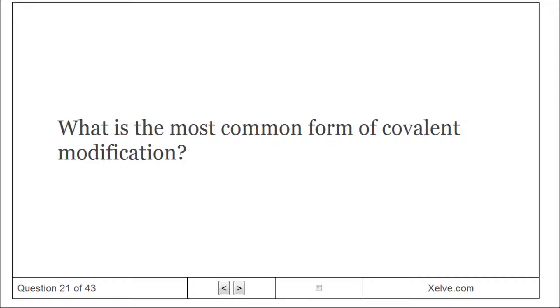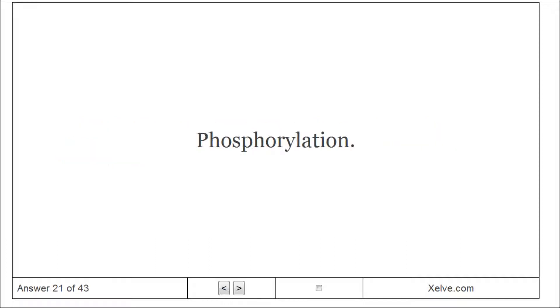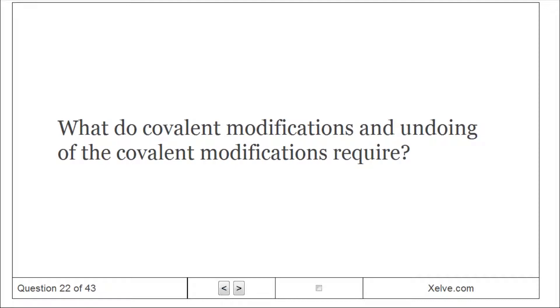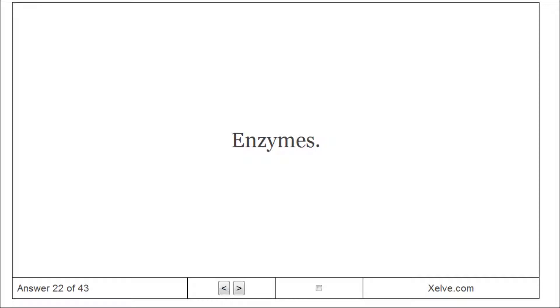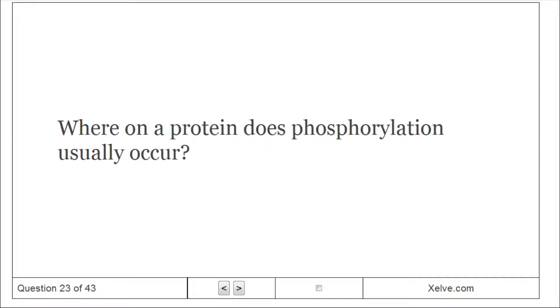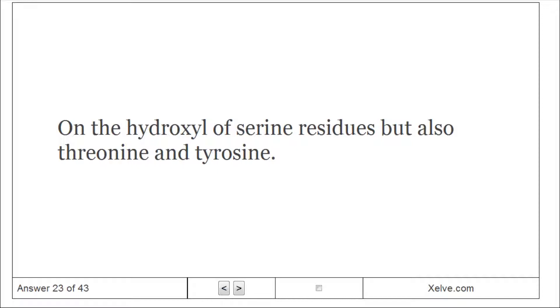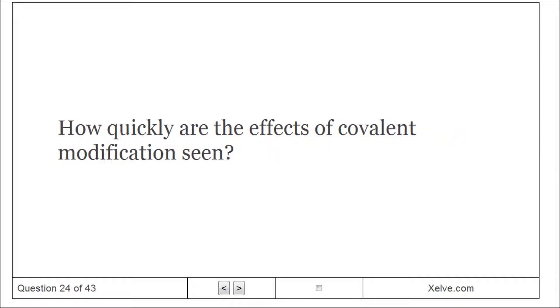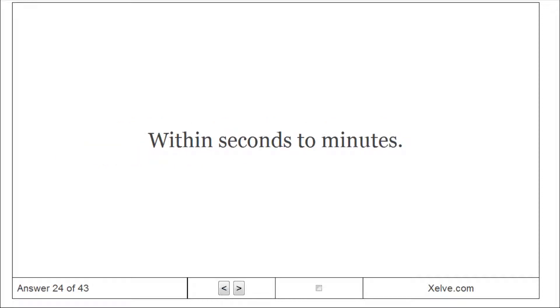What is the most common form of covalent modification? Phosphorylation. What do covalent modifications and undoing of the covalent modifications require? Enzymes. Where on a protein does phosphorylation usually occur? On the hydroxyl of serine residues but also threonine and tyrosine. How quickly are the effects of covalent modification seen? Within seconds to minutes.